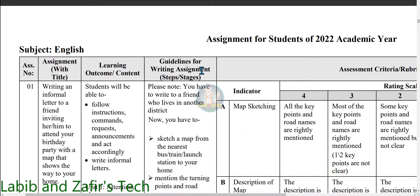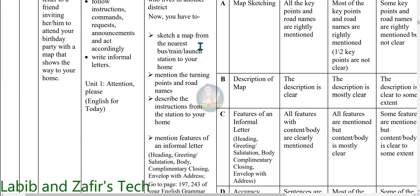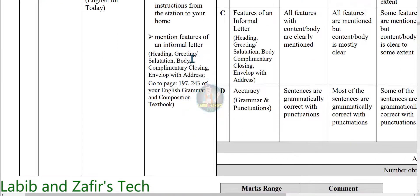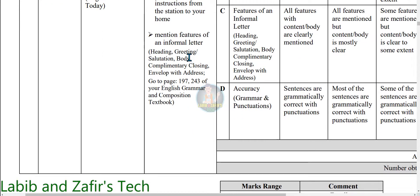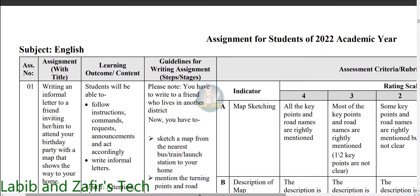Now we can see the guidelines for writing the assignment. Please note: you have to write to a friend who lives in another district. You have to sketch a map from the nearest bus, train, or launch station to your home. Mention the turning points and road names. Describe the instructions from the station to your home. Mention features of an informal letter: heading, greeting, salutation, body, complimentary closing, and envelope with address. Go to page 197 or 243 of your English Grammar and Composition textbook.